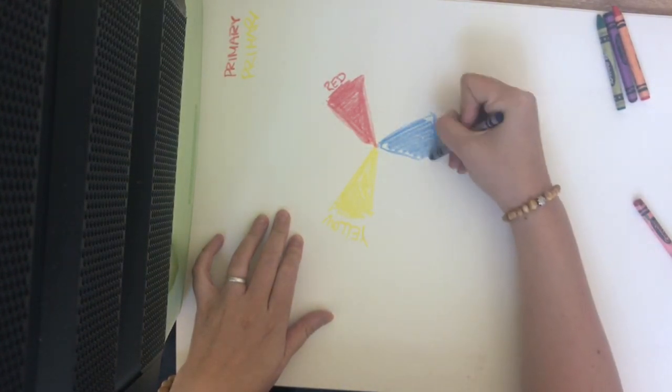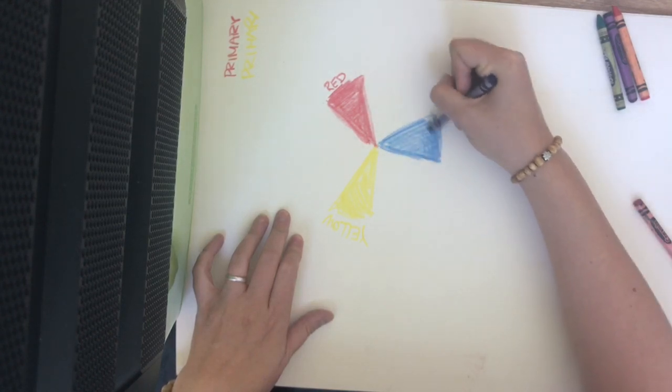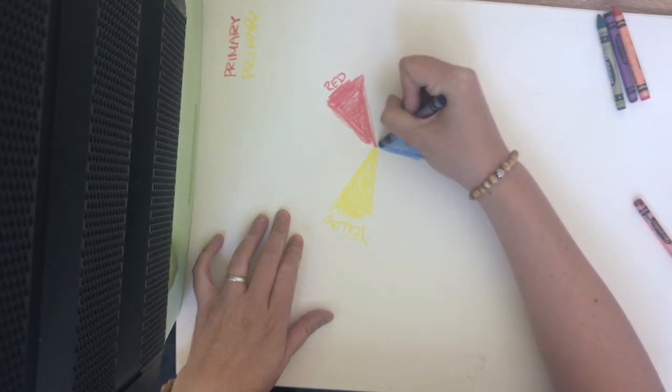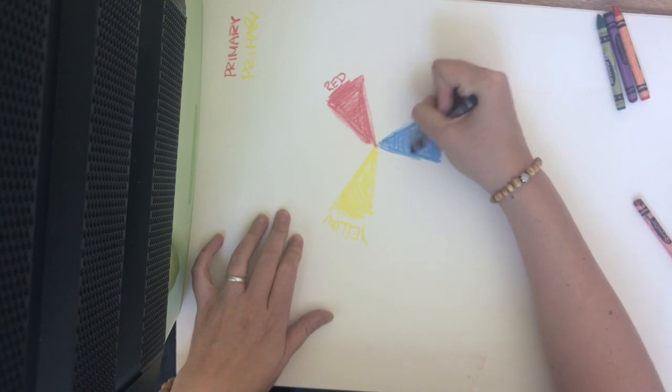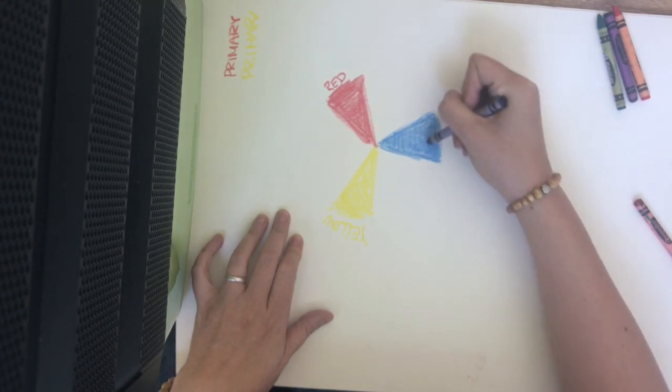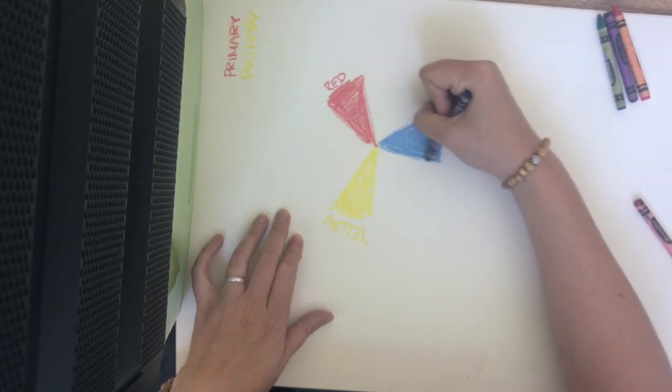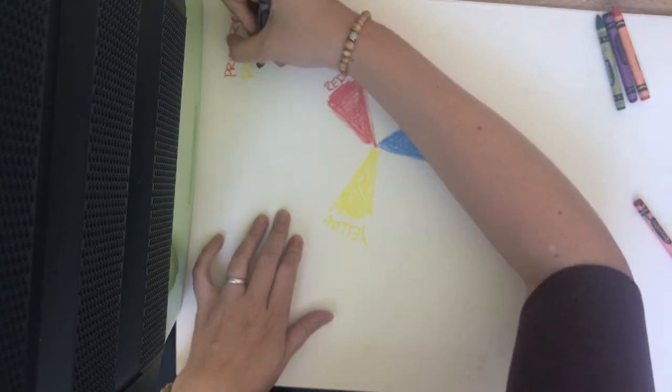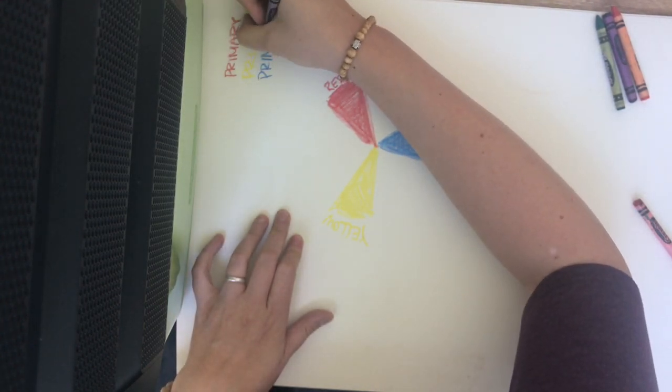Now with these three colors, you can make every color that exists. Every color that exists. You might need some white. You might need some black. But if you have pure pigments of red, yellow, and blue, you should be able to make all of the colors. And these are really all that we have to use. This is a primary color.